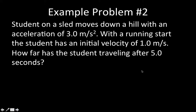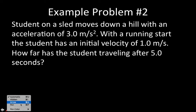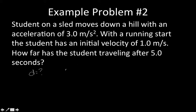Let's do another example. Same ideas as before: you've got the student on the sled going down the hill at 3 meters per second squared, with an initial velocity of 1 meter per second. But this time it wants to know how far has the student traveled after five seconds. So now we're looking for distance. In this case, we're going to solve for distance: distance equals the initial velocity multiplied by the time, plus one half times the acceleration times time squared.